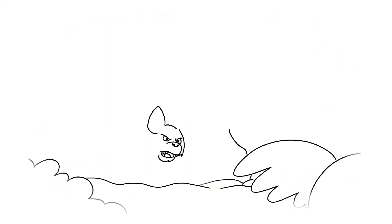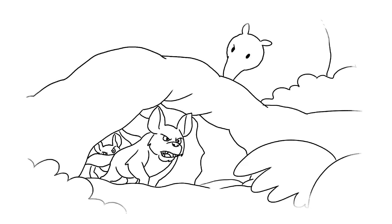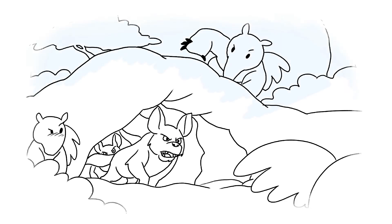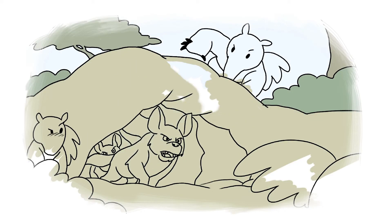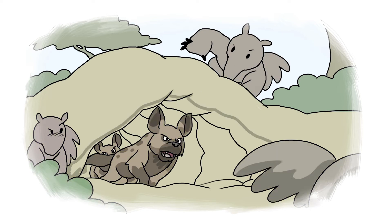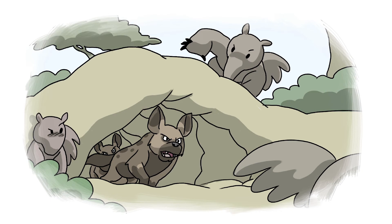When they were outside the lair, they concocted a plan. The biggest one stomped around loudly. And when the wild dogs came out to see what the noise was, the middle-sized one ran off, leading them away from the entrance.